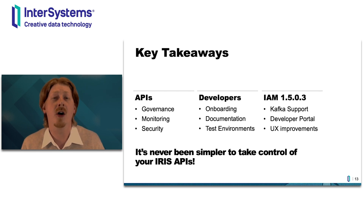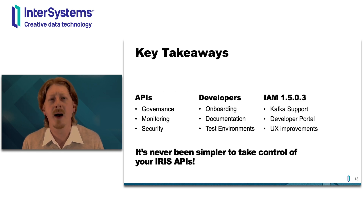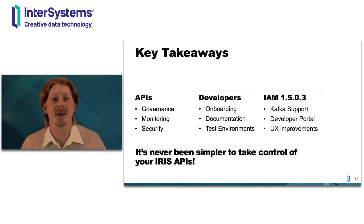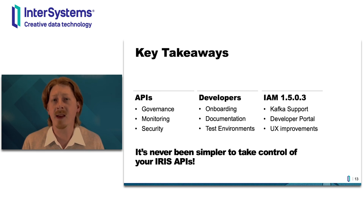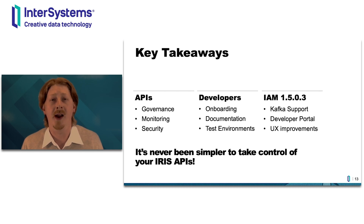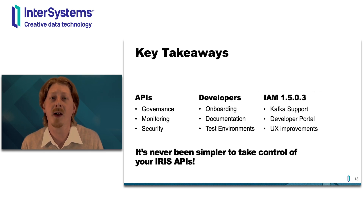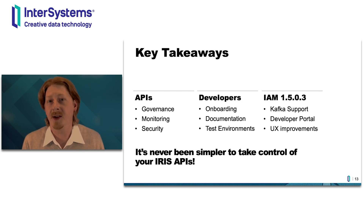The next big topic is onboarding. You want to make sure that developers — whether they are internal developers from different departments or developers from third-party companies — can quickly learn and understand what APIs are available to them and how they're supposed to use them. This will free up your development team to really work and innovate on the APIs instead of explaining how they're supposed to use what you already have. Also take a look at the latest release of IAM 1.5, with the addition of Kafka logging support which allows you to stream your requests directly to a Kafka system — enabling really interesting analytical use cases or feeding one of your data lakes.